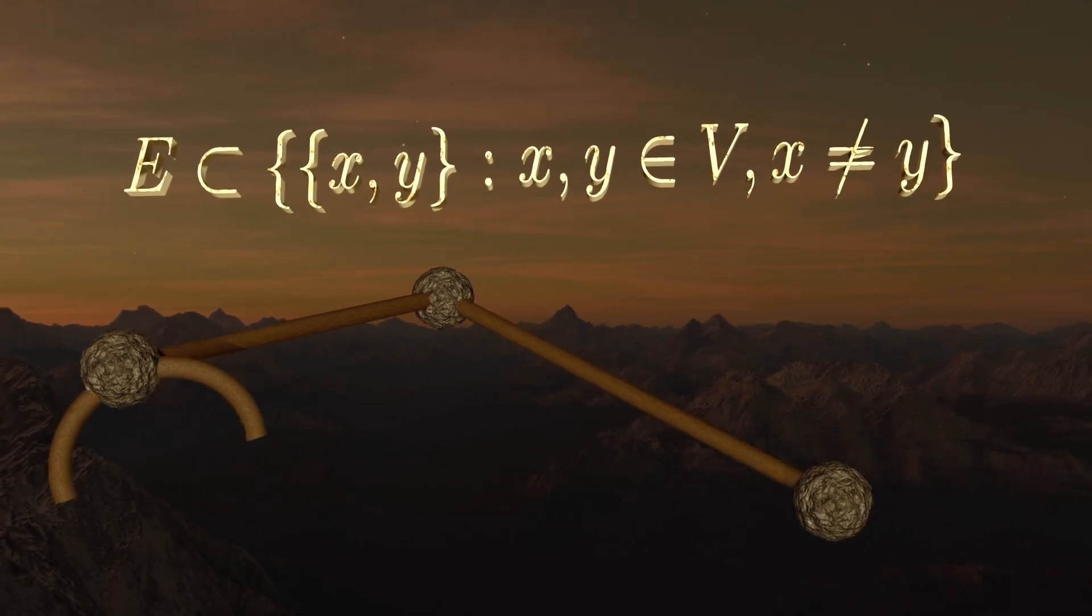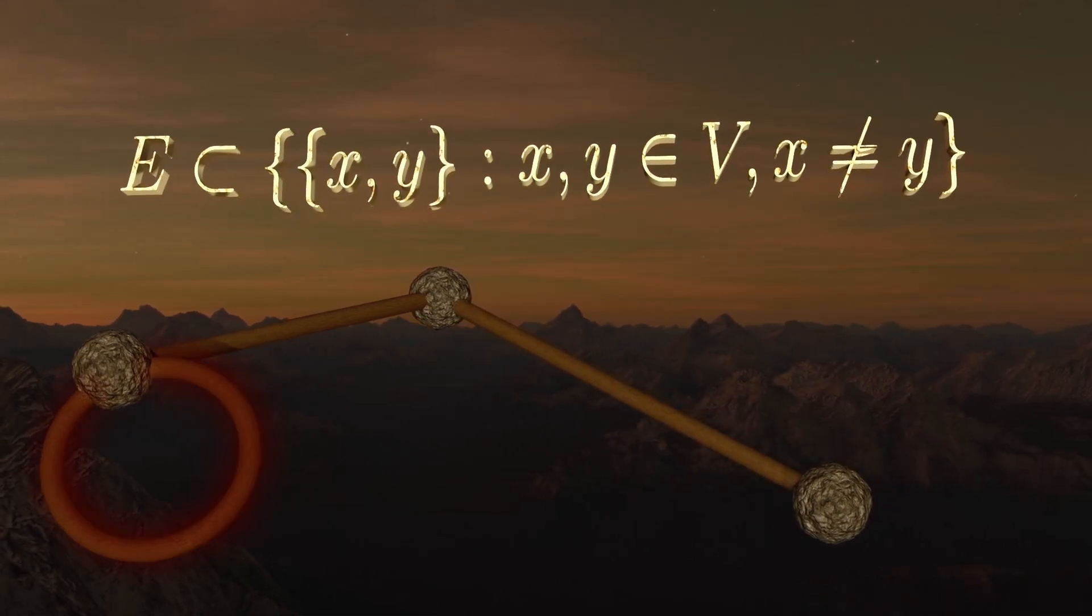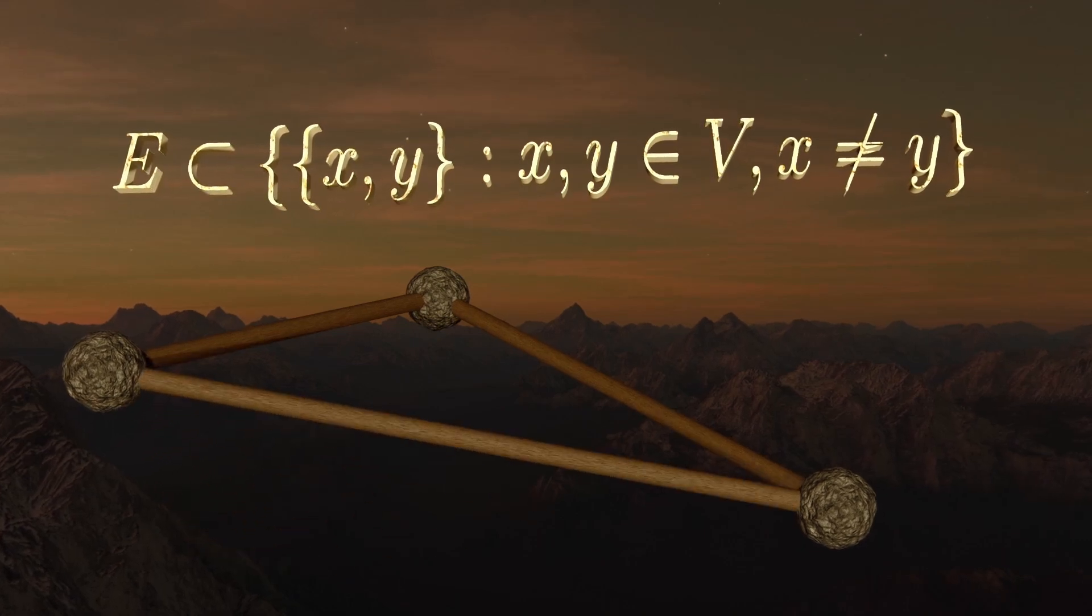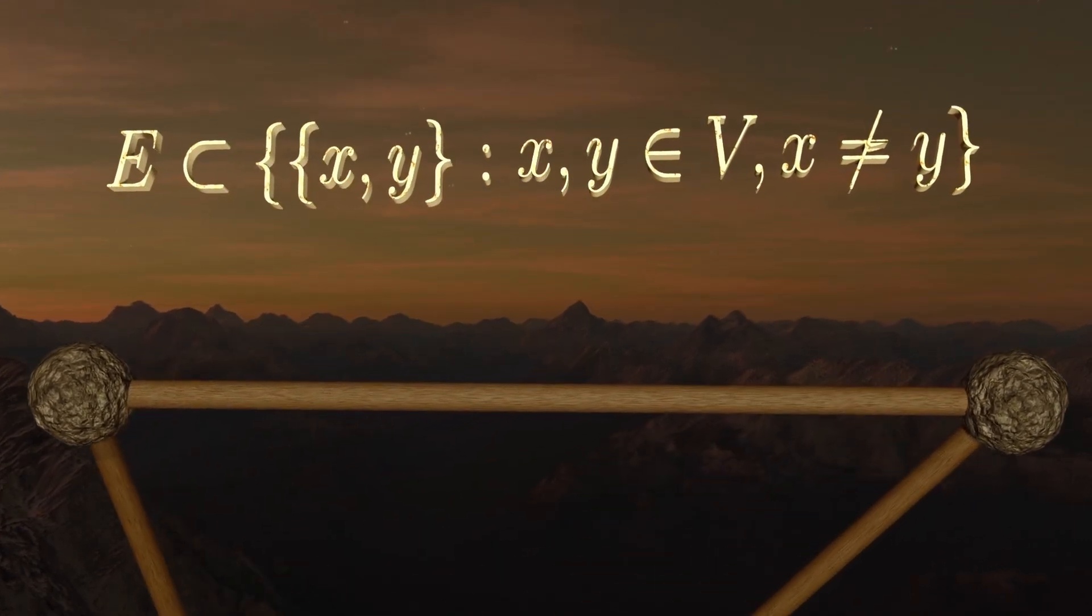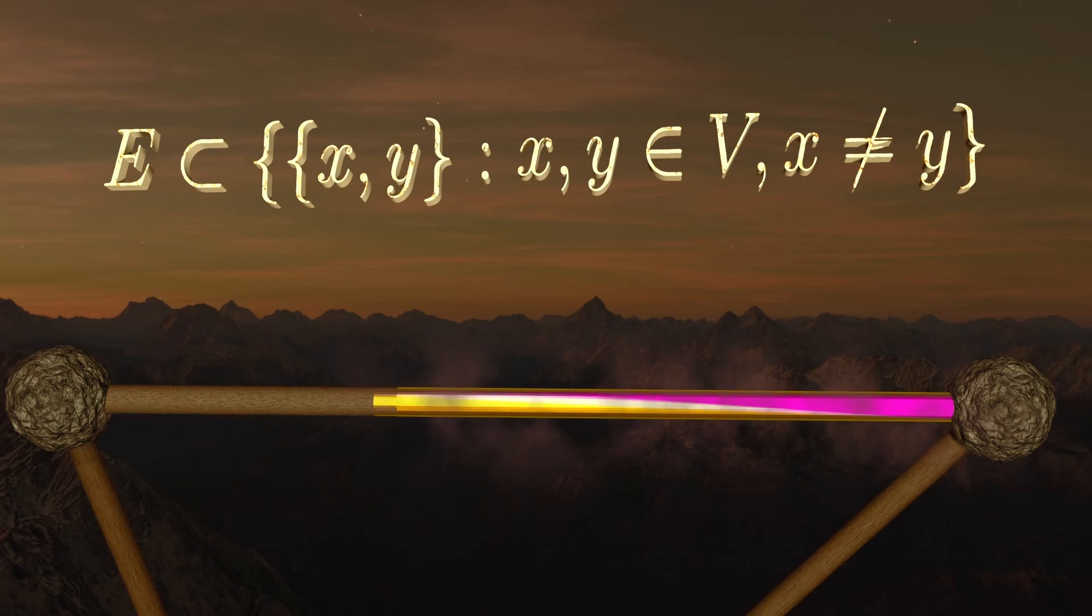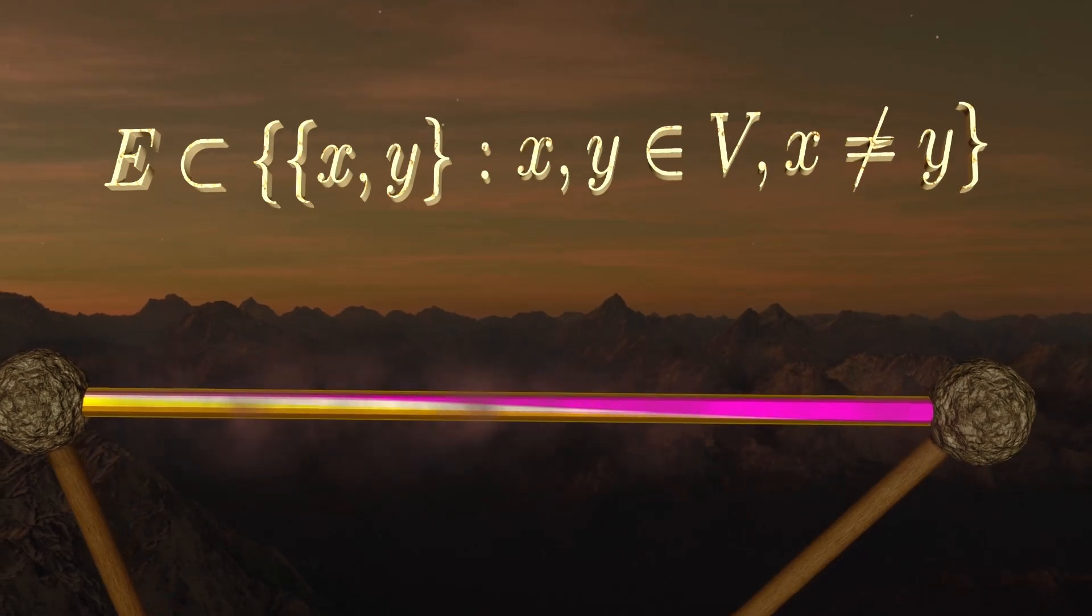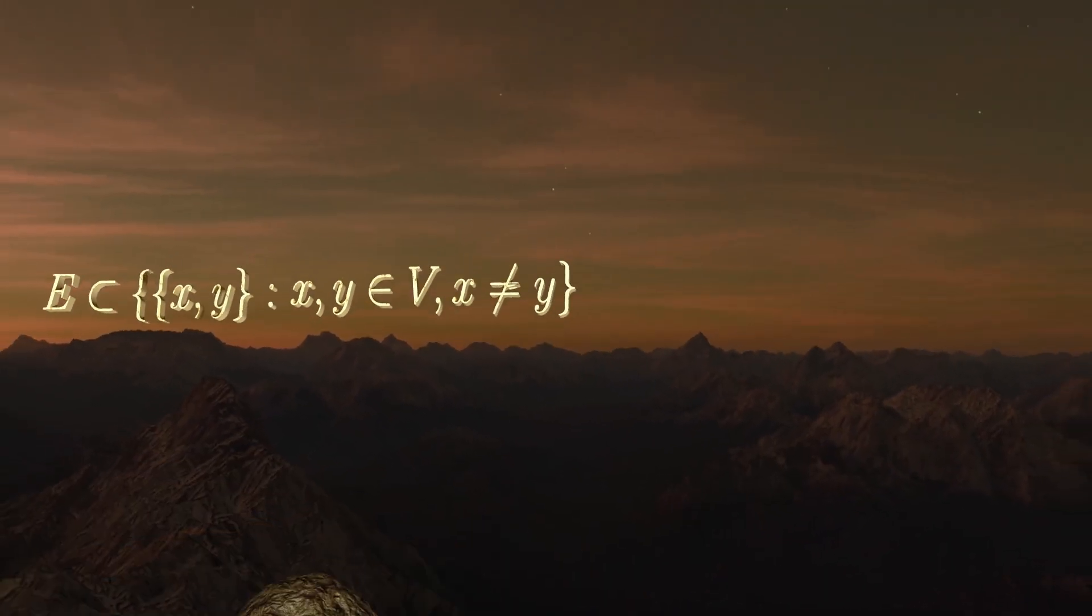But requiring the vertices to be distinct means we can't have loops. And since the order of elements in a set doesn't matter, this means we're not giving preference to either vertex, so there's no concept of direction or flow assigned to an edge. But these are things which can be useful, but you need to make a special definition to work with them.